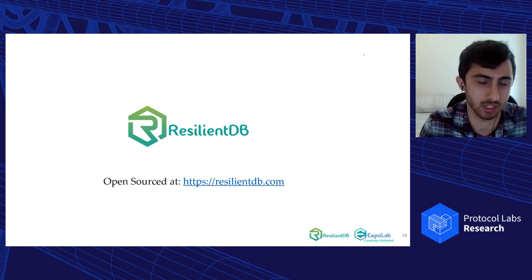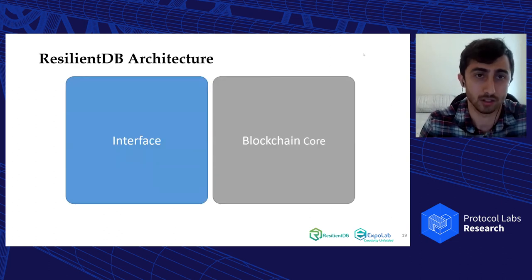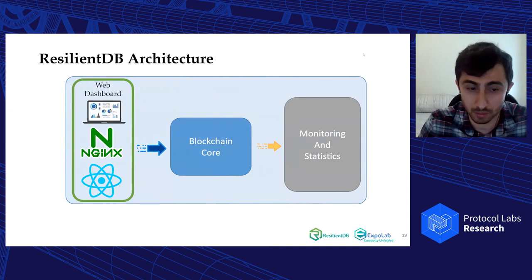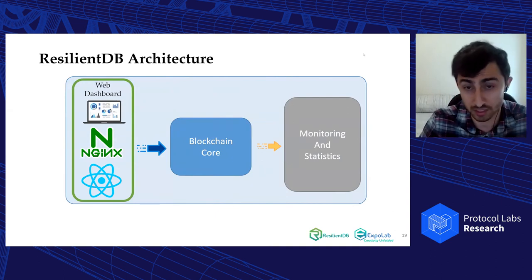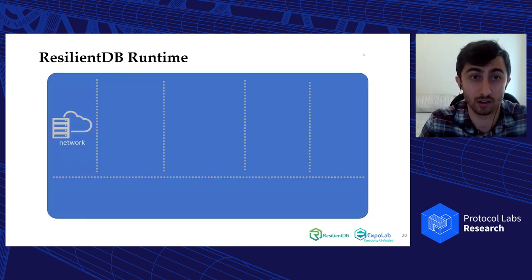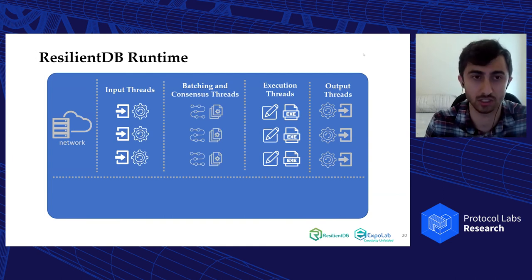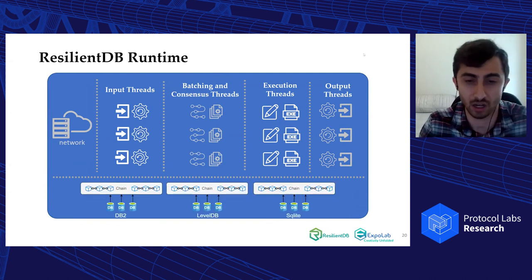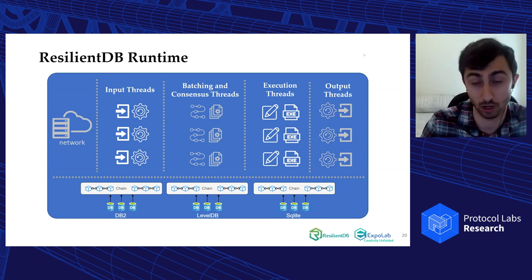We have implemented our Ring BFT protocol in ResilientDB, which is an open-source permissioned blockchain fabric. You can take a look at ResilientDB.com. The ResilientDB architecture has two parts: an interface and the blockchain core. We implemented Ring BFT inside the blockchain core, which has a sophisticated parallel and multi-threaded structure with different input threads, batching threads, execution threads, and output threads, as well as underlying different storage layers.